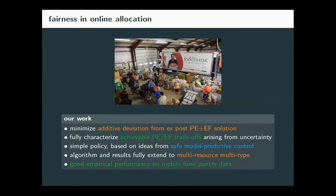Here's a quick summary of our results. We find a solution that minimizes the additive deviation from the ex post Pareto efficient and envy-free solution. We fully characterize the achievable trade-offs between these two objectives — the trade-off arises from uncertainty in demand. We also show a simple policy that achieves the optimal trade-off at any point on that curve. The policy is based on ideas from safe model predictive control, and the algorithm and analysis extend to multi-resource, multi-type settings. We also do empirical work on the mobile food pantry data.